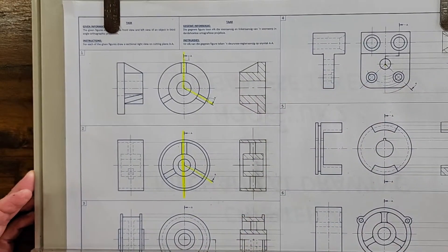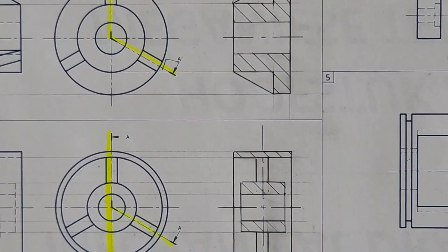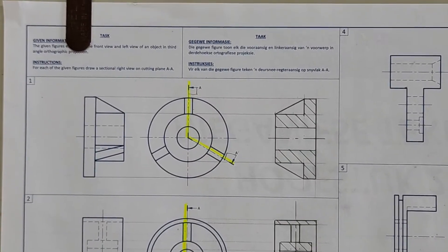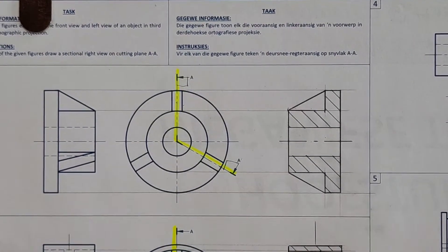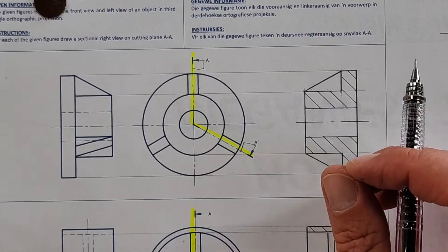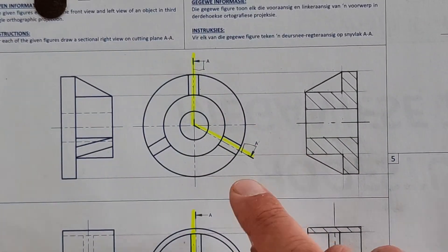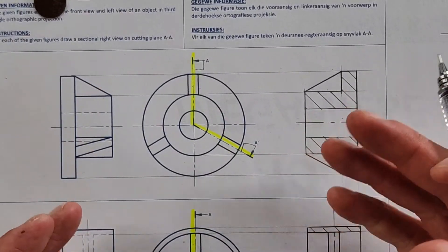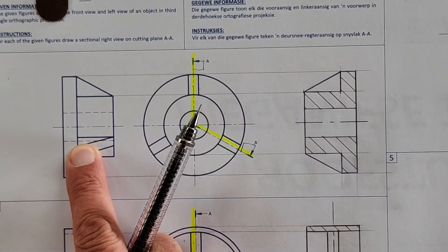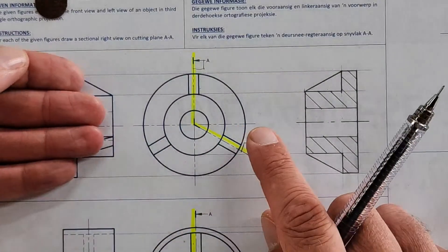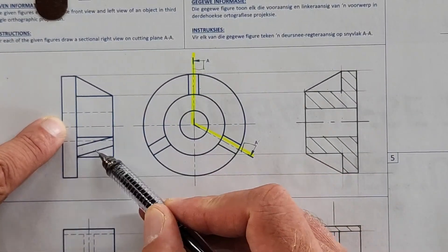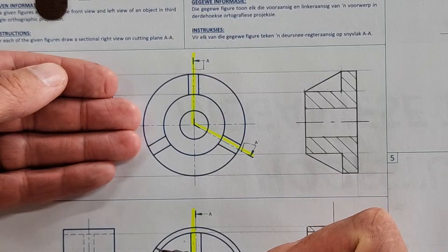Let me zoom in to see it a little bit better. The drawing has been done already, so those watching now have the advantage of seeing the answer as well. They've given us in third angle orthographic projection two views — in mechanical assembly it's always going to be in third angle. We have a front view and a left view given, and if I look from the left hand side onto this component, that is the view that I see.